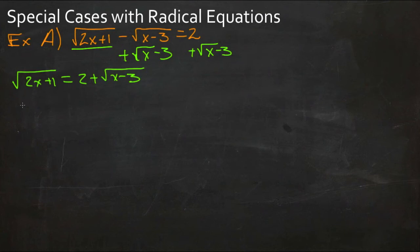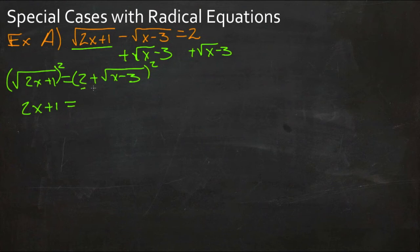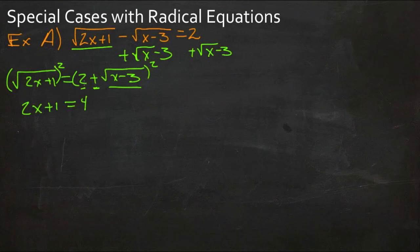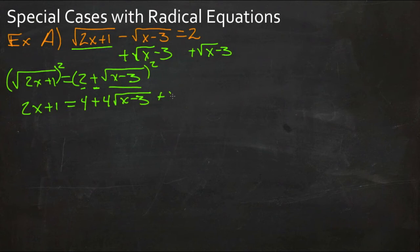Now we'll square both sides and we'll get 2x plus 1 on the left. On the right, this is a binomial square with a positive center, so it expands as: first term squared, plus 2 times the first term times the second term, plus the second term squared. The first term squared is 4, then 2 times the first term times the second term gives us 4 times the square root of x minus 3, and the last term squared is just x minus 3.